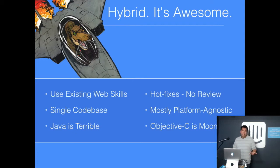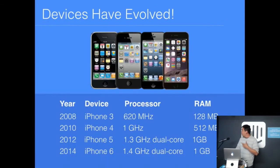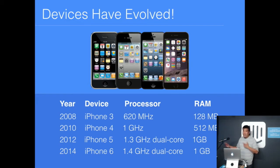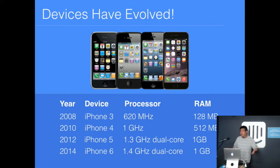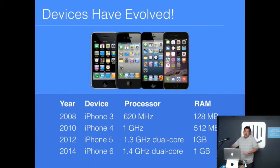Some of that reputation is deserved and some of it isn't. One thing to point out is that devices have evolved considerably. This is the history of the hardware for the iPhone since 2008 — when PhoneGap first hit the scene and we first started doing hybrid app development. Very big impacts in terms of the evolution of the hardware, not just in the ability of the phone to performantly process our JavaScript, but also in terms of the GPU and our ability to do things like hardware-accelerated CSS.